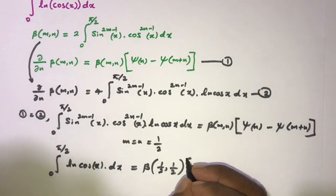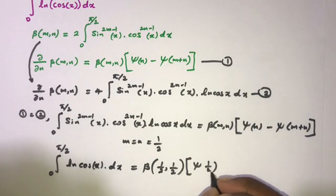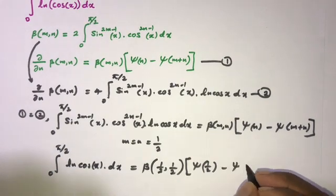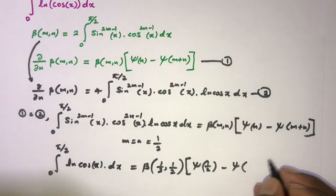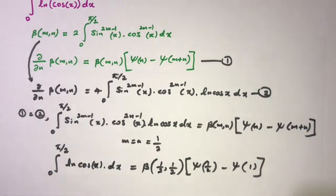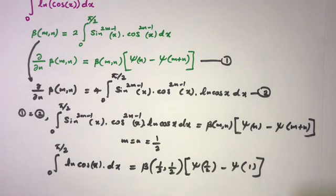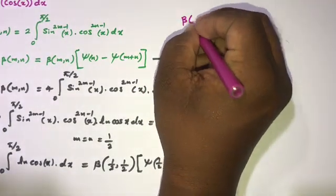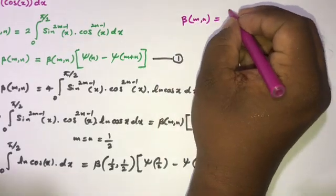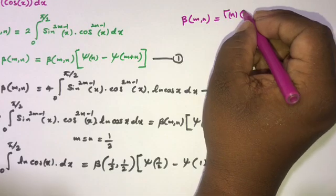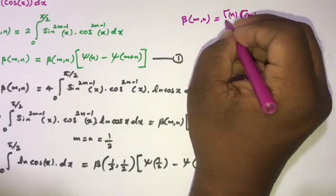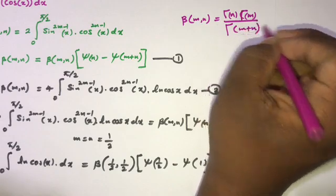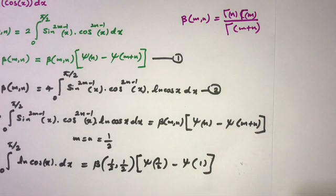The right-hand side becomes β(1/2, 1/2) times [digamma of 1/2 minus digamma of 1/2 + 1/2], which is digamma of 1/2 minus digamma of 1. We also recall the property β(m, n) = Γ(m)·Γ(n) / Γ(m+n).